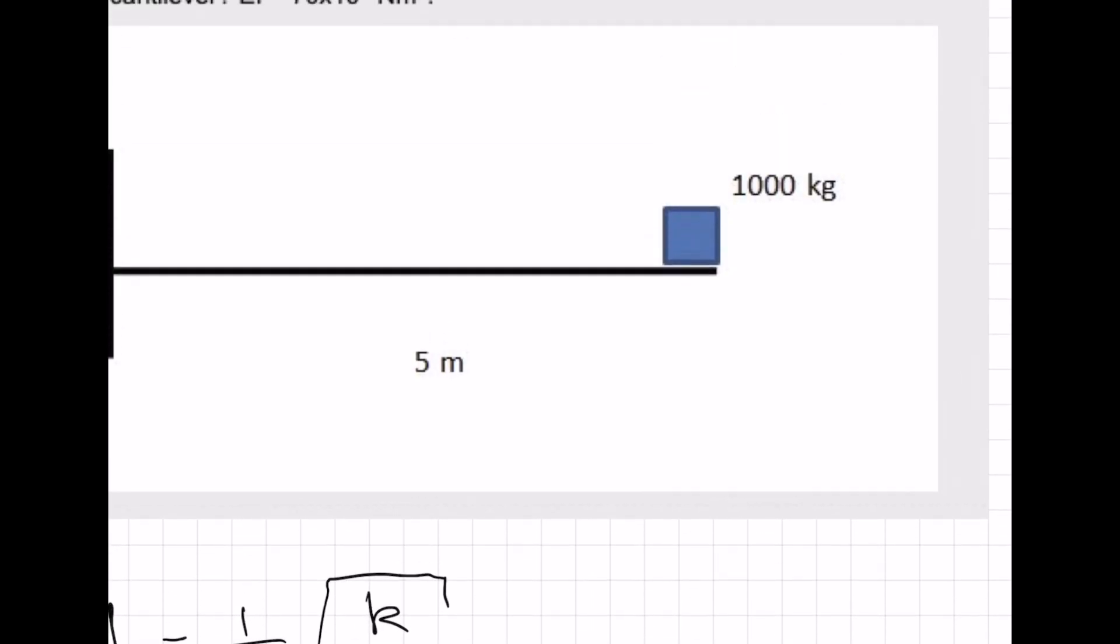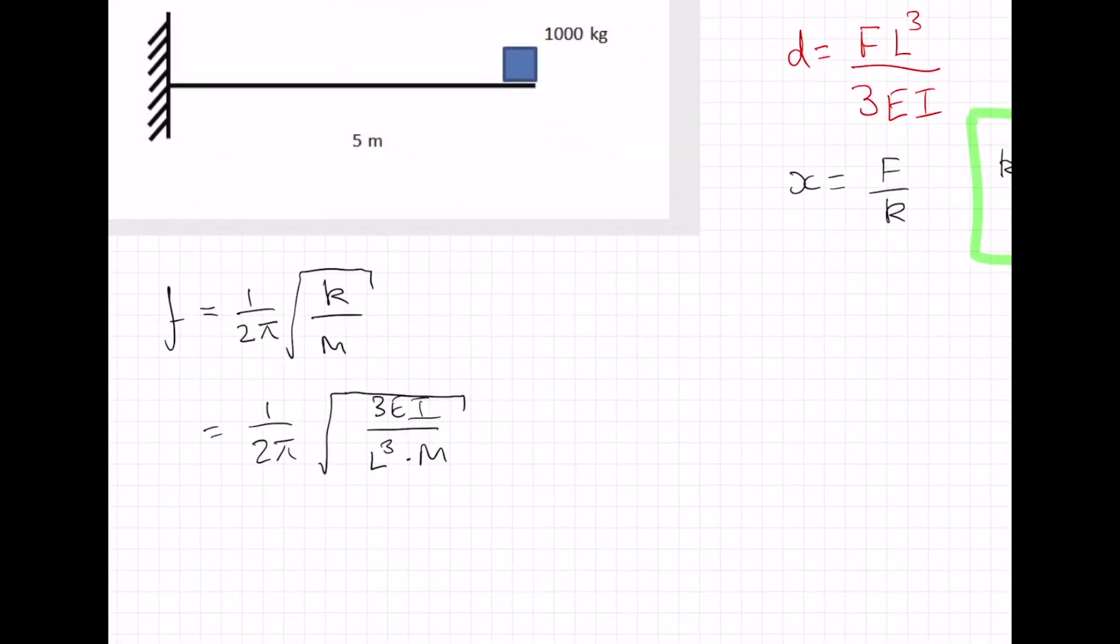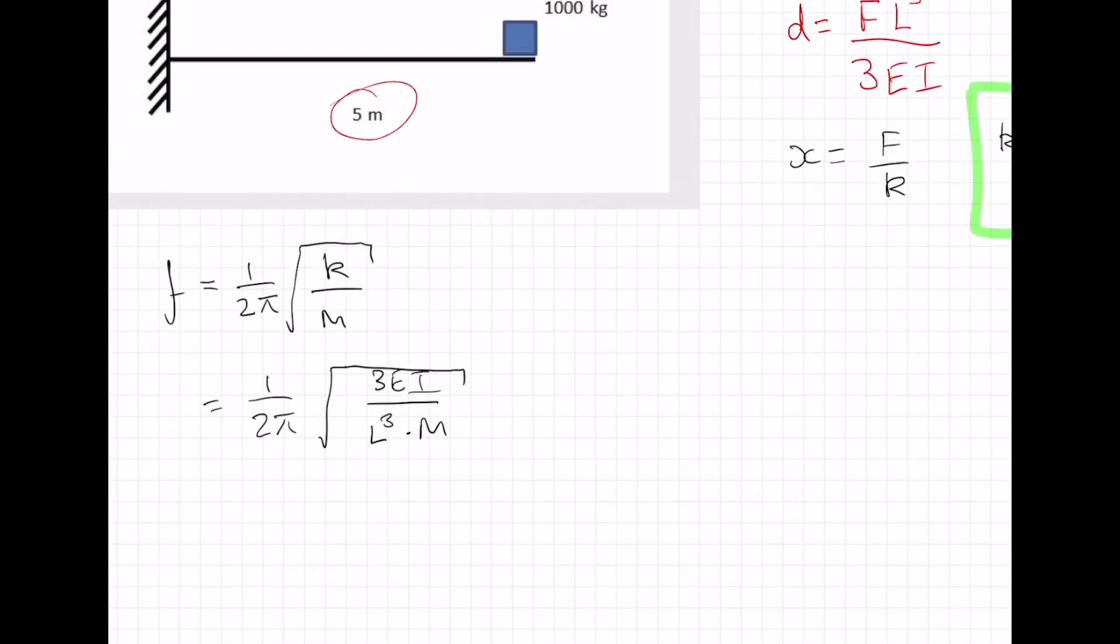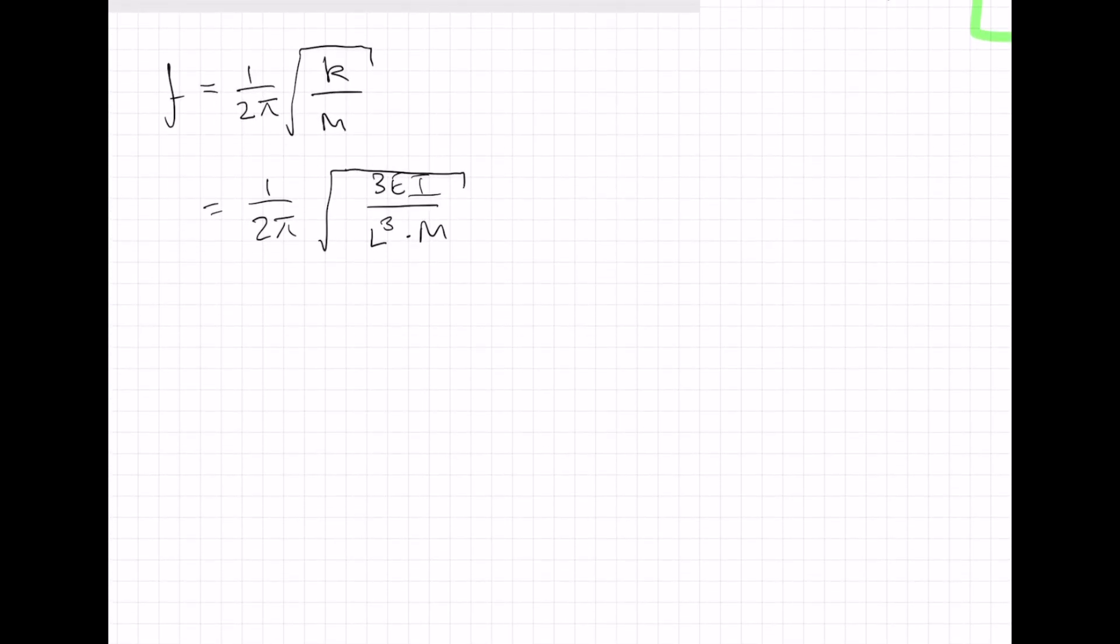We know EI. It is 70 times 10 to the 6 newton meters squared. We know L cubed, L is 5, and mass is 1,000 kilograms, so we have all the information we need.